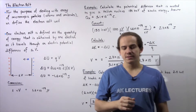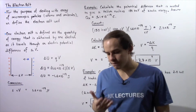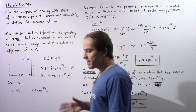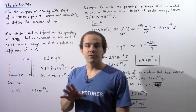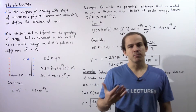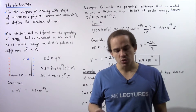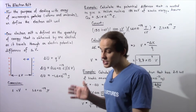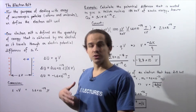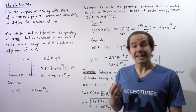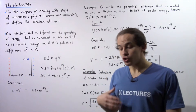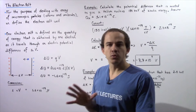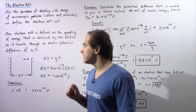In this lecture, we're going to discuss the concept of the electron volt. Now the most common unit of energy is joules, but whenever we're dealing with subatomic particles such as electrons, protons, and neutrons, as well as microscopic objects such as atoms, molecules, and compounds, we essentially can't use joules because joules is a very large quantity of energy when we're dealing with the microscopic level.